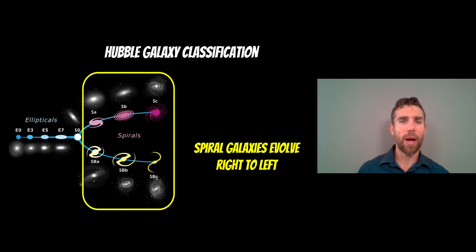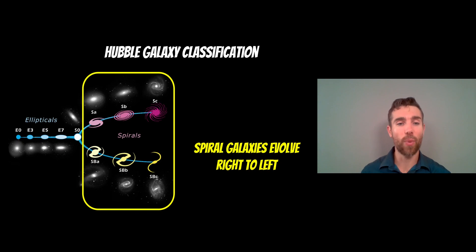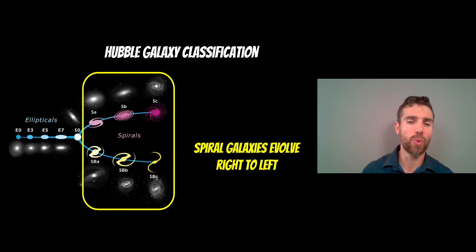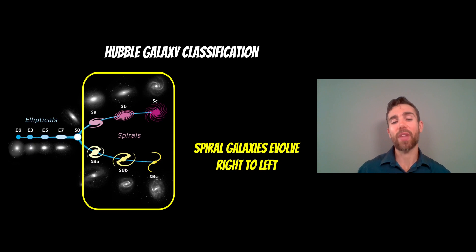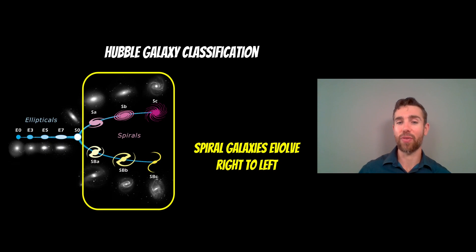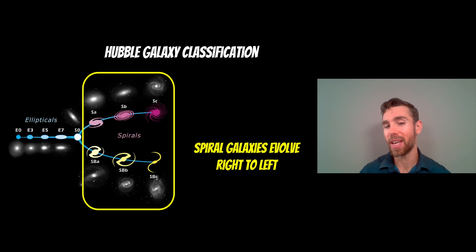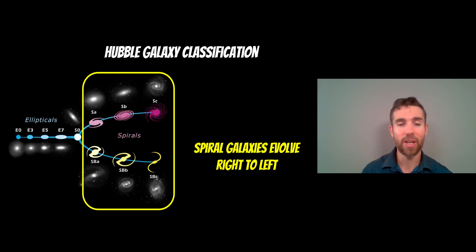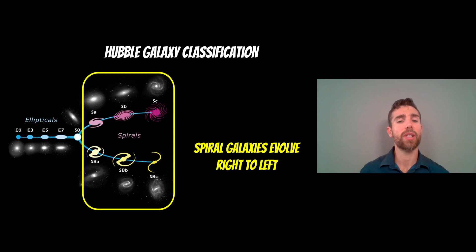Before we do that, let's go back to the Hubble classification, or the tuning fork for galaxies. On the right-hand side you have spirals with a few different pathways: along the top you've got normal spirals, along the bottom you have barred spirals, and sometimes there's one in the middle that's in between — not quite a full bar and not quite a normal spiral. The evolution of these spiral galaxies occurs from right to left, so starting at the top, SC would be an early-type spiral — fairly blue because of young blue stars and a lot of gas content, with fairly open spiral arms. As they evolve, the arms get tighter, they lose gas as it gets turned into stars, they get redder, and they evolve toward ellipticals.